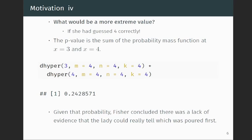And so given that probability, what Fisher did is that he concluded there was a lack of evidence that the lady could really tell which was poured first. Of course, he could have increased the sample size because we know that for low sample sizes, sometimes we just don't have enough power to reject the null hypothesis. But this is what happened and this is what he did.